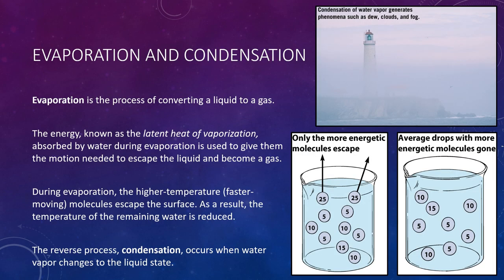Heat is also absorbed during the process of evaporation — the process of converting a liquid to a gas. The energy absorbed by water molecules during evaporation is used to give them the motion needed to escape the surface of a liquid and become a gas. This energy is referred to as the latent heat of vaporization. During evaporation, the higher-temperature, faster-moving molecules escape from the surface. As a result, the average molecular motion — and hence the average temperature — of the remaining water is reduced. Hence the common expression that evaporation is a cooling process.